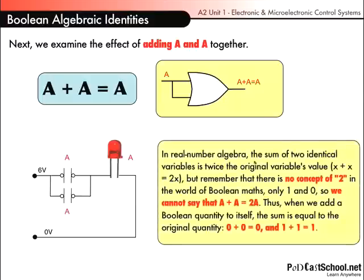In real number algebra, the sum of two identical variables is twice the original variable's value. X plus X would normally equal 2X. But remember, there is no concept of a 2 in the world of Boolean maths, only 1 and 0. So we cannot say that A plus A equals 2A.